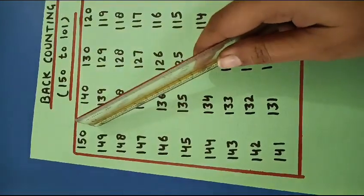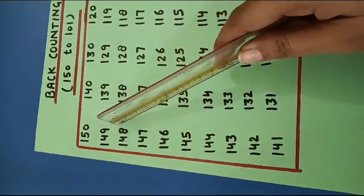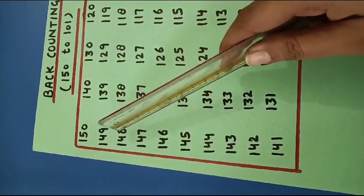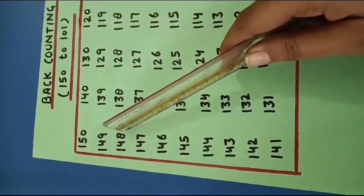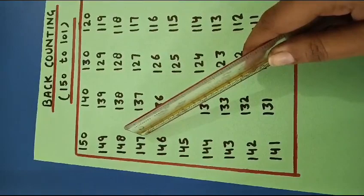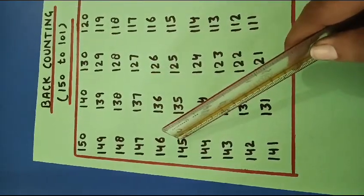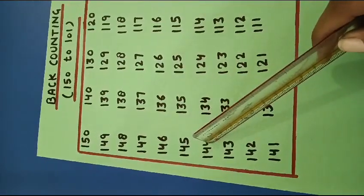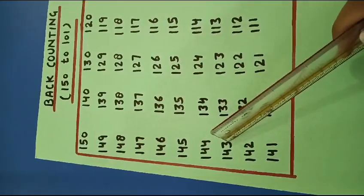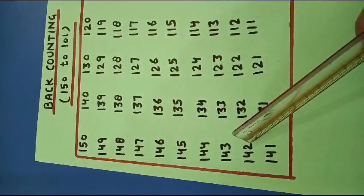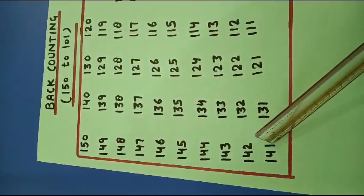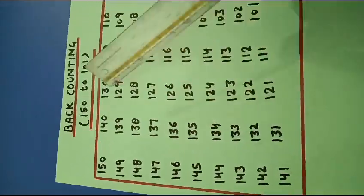One hundred and fifty, one hundred and forty-nine, one hundred and forty-eight, one hundred and forty-seven, one hundred and forty-six, one hundred and forty-five, one hundred and forty-four, one hundred and forty-three, one hundred and forty-two, one hundred and forty-one.